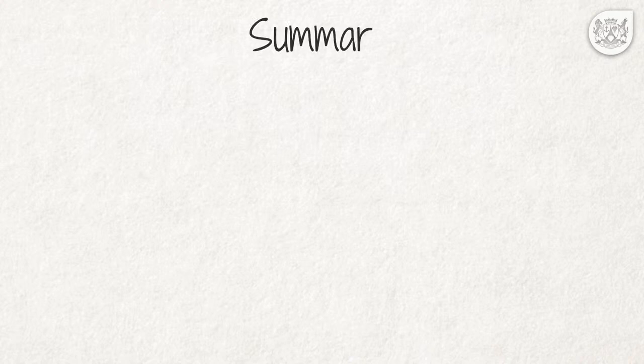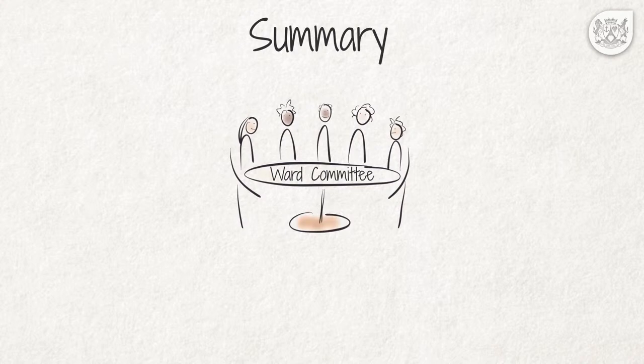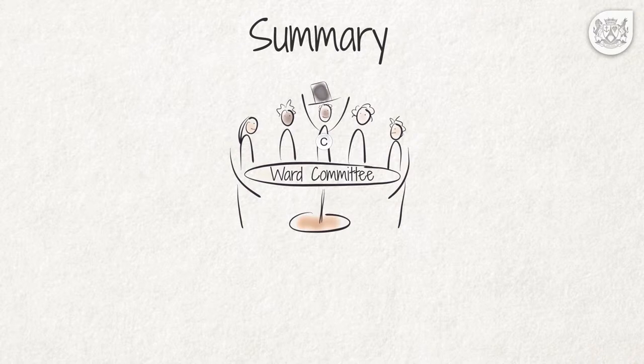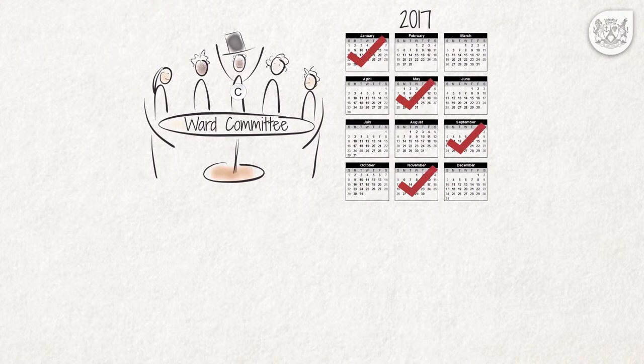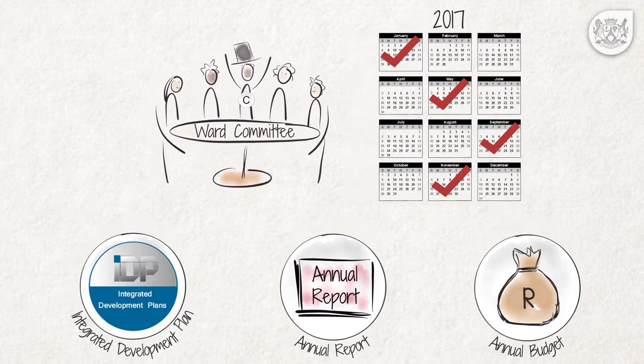Summary. In this video, we explained the nature, functions and responsibilities of ward committees. The main purpose of ward committees is to ensure that there is effective communication between the municipal council and the community. The ward councillor is the chairperson of the ward committee, whose members are democratically elected and represent a wide variety of community interests. The ward committee should meet at least four times a year, and when important municipal matters such as the IDP, annual report, and budget are being drafted. Ultimately, ward committees are designed to bring the democratic process within the reach of the people.